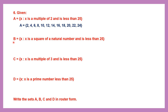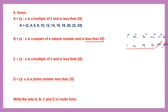Set B: x is a square of a natural number and less than 25. The squares of natural numbers are: 1² = 1, 2² = 4, 3² = 9, 4² = 16, 5² = 25, 6² = 36. Since the condition is less than 25, we cannot write 25 or 36. So B = {1, 4, 9, 16}.